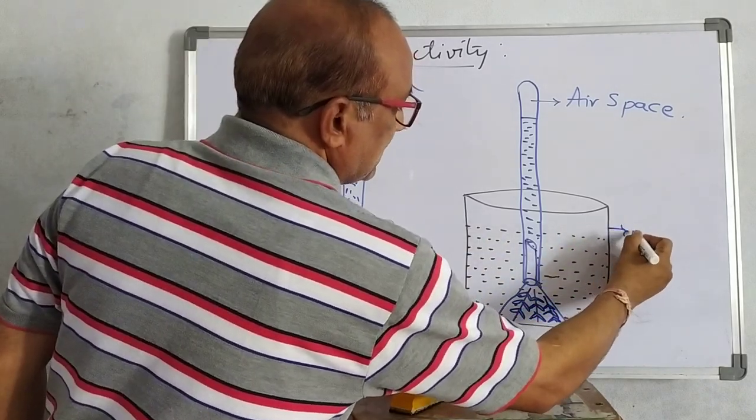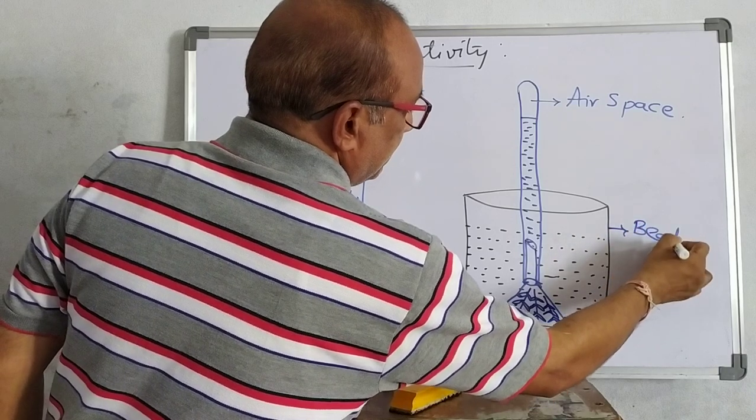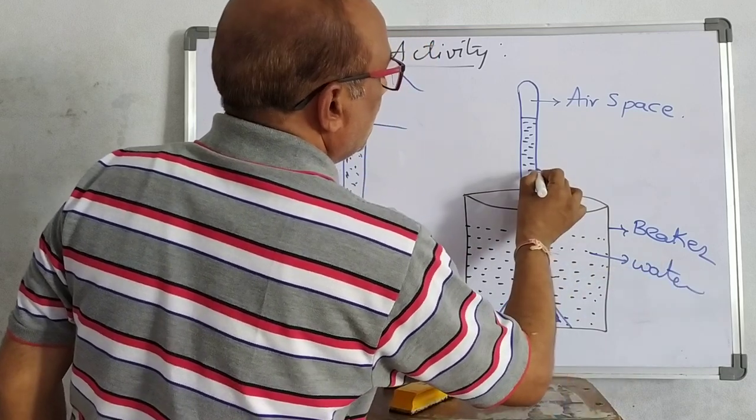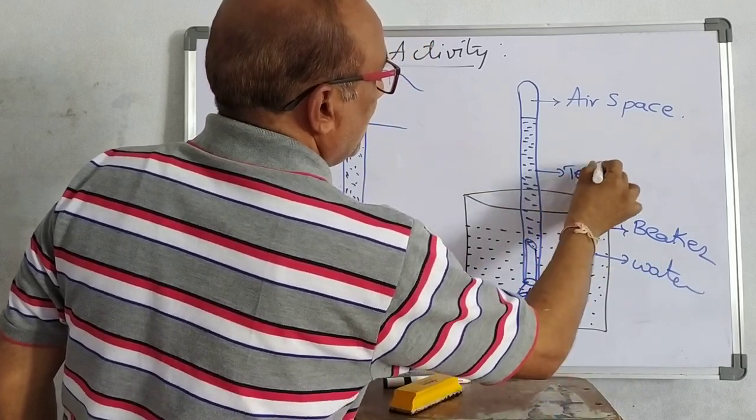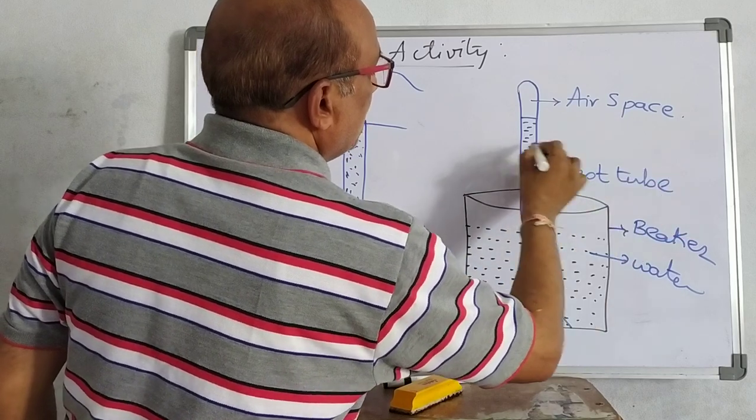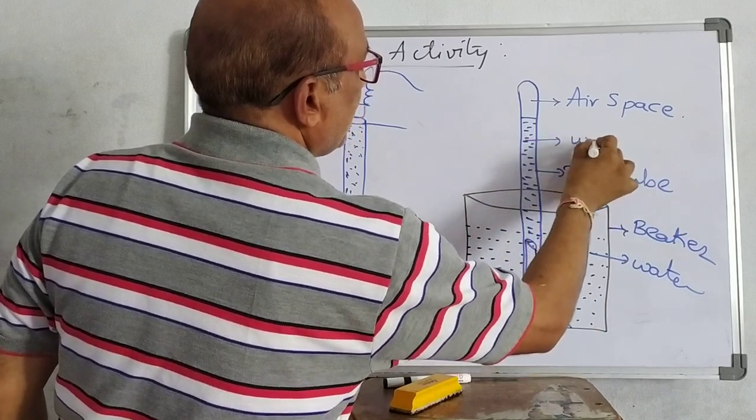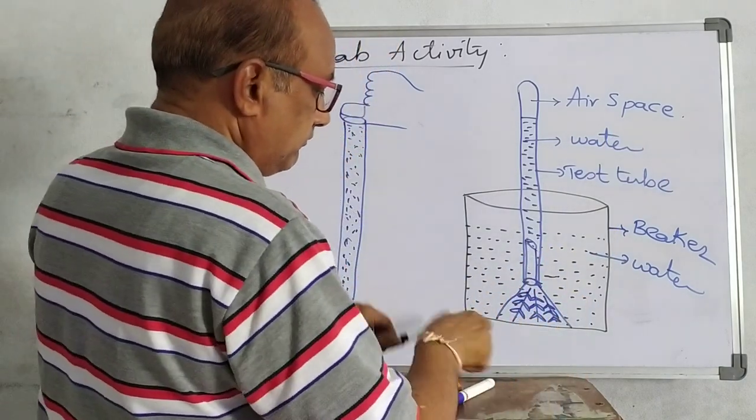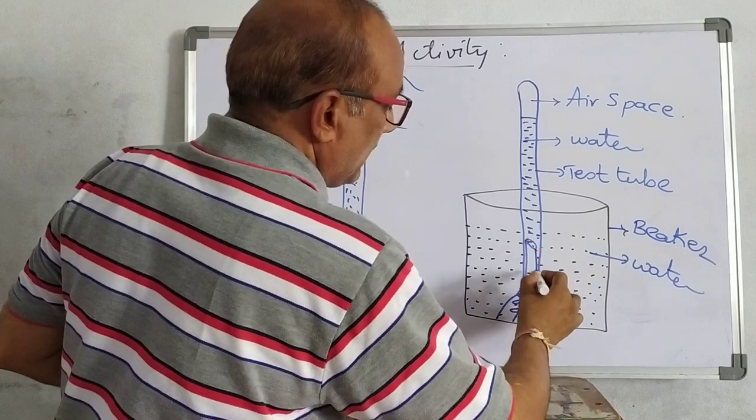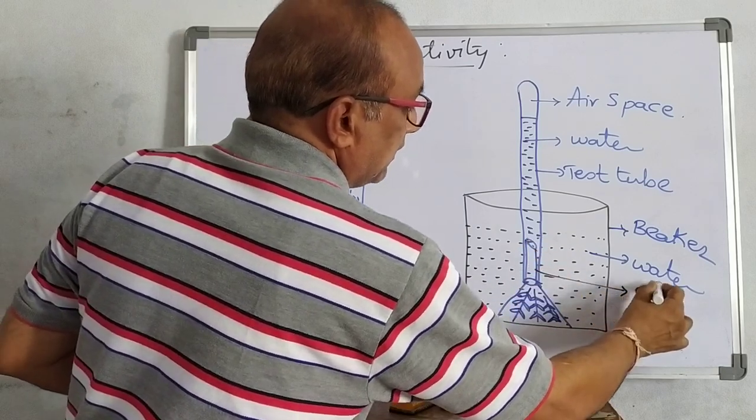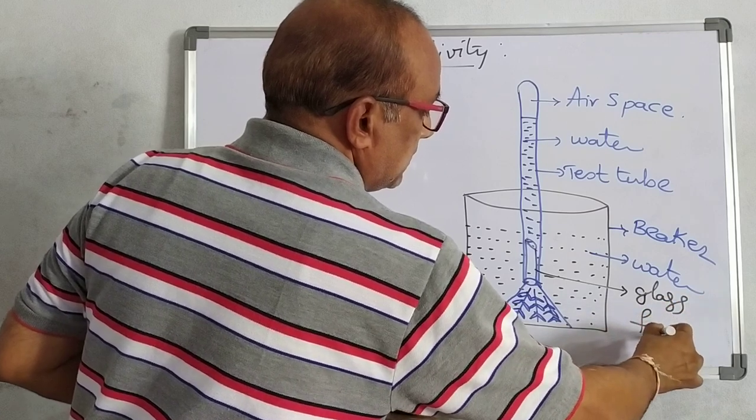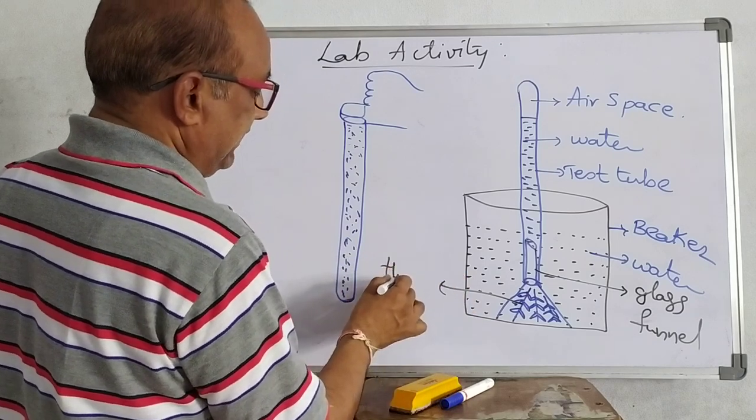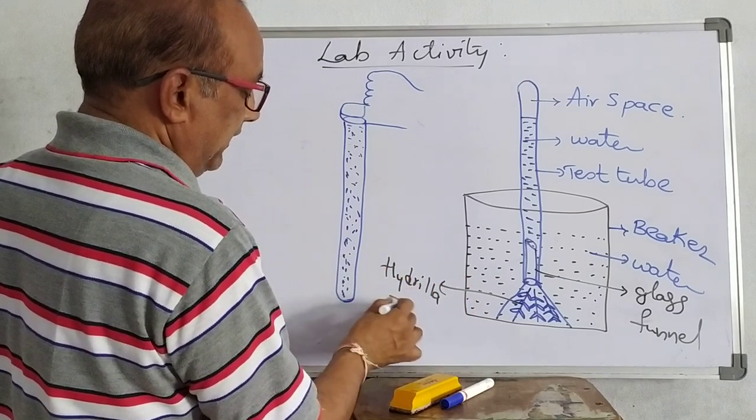Then labeling. This is the beaker. This is the water. This is the test tube. Again it contains water. And this one glass funnel. And these are the Hydrilla twigs.